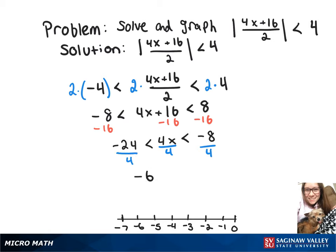Which gives us negative 6 is less than x is less than negative 2. So our interval here is going to be parenthesis negative 6, negative 2, parenthesis. And then an open circle on the negative 6, open circle on the negative 2, and a line connecting them.